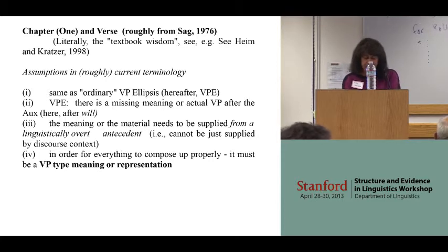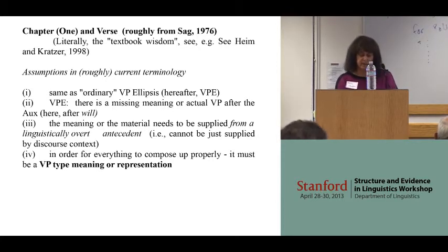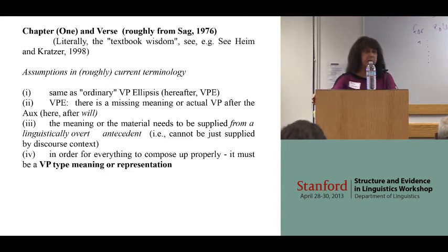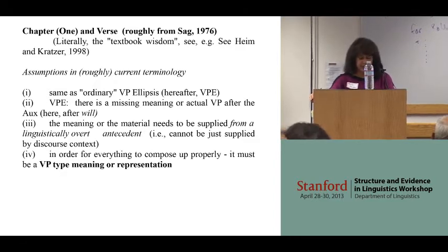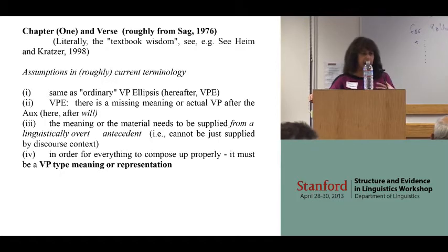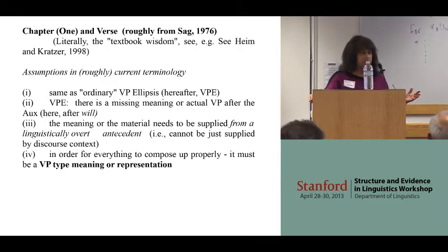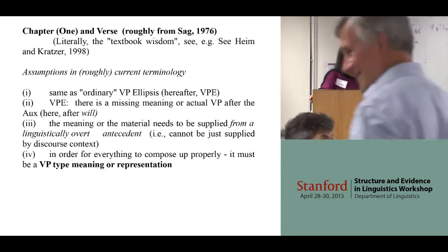The real chapter one in verse that begins the history of discussion about this construction comes from Ivan's thesis. What he said in his thesis has literally become the textbook wisdom on this in some circles — it's in the Heim-Kratzer textbook. I'm going to phrase this in modern terms rather than exactly the terms Ivan used, but it's basically the same idea and essentially his analysis.